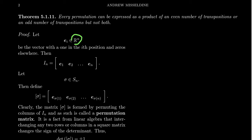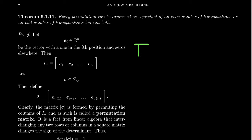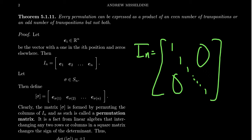Remember that R^n is our vector space consisting of column vectors with n entries of real numbers. The vector e_i is the i-th column of the identity matrix — it's the vector with a one in the i-th position and zeros everywhere else. If you think of the identity matrix I_n, which has ones along the diagonal and zeros everywhere else, the i-th column (or row) is just e_i.